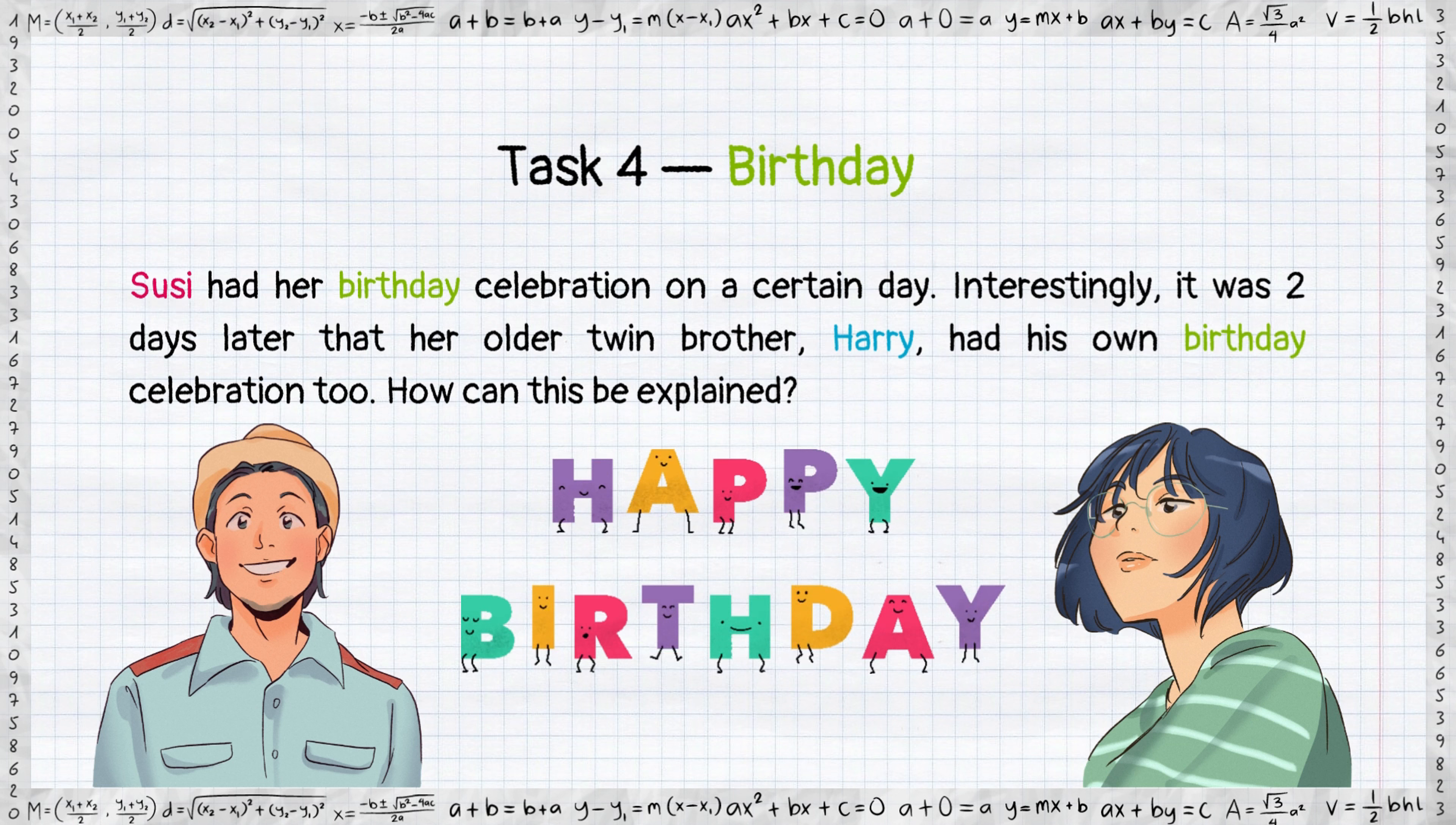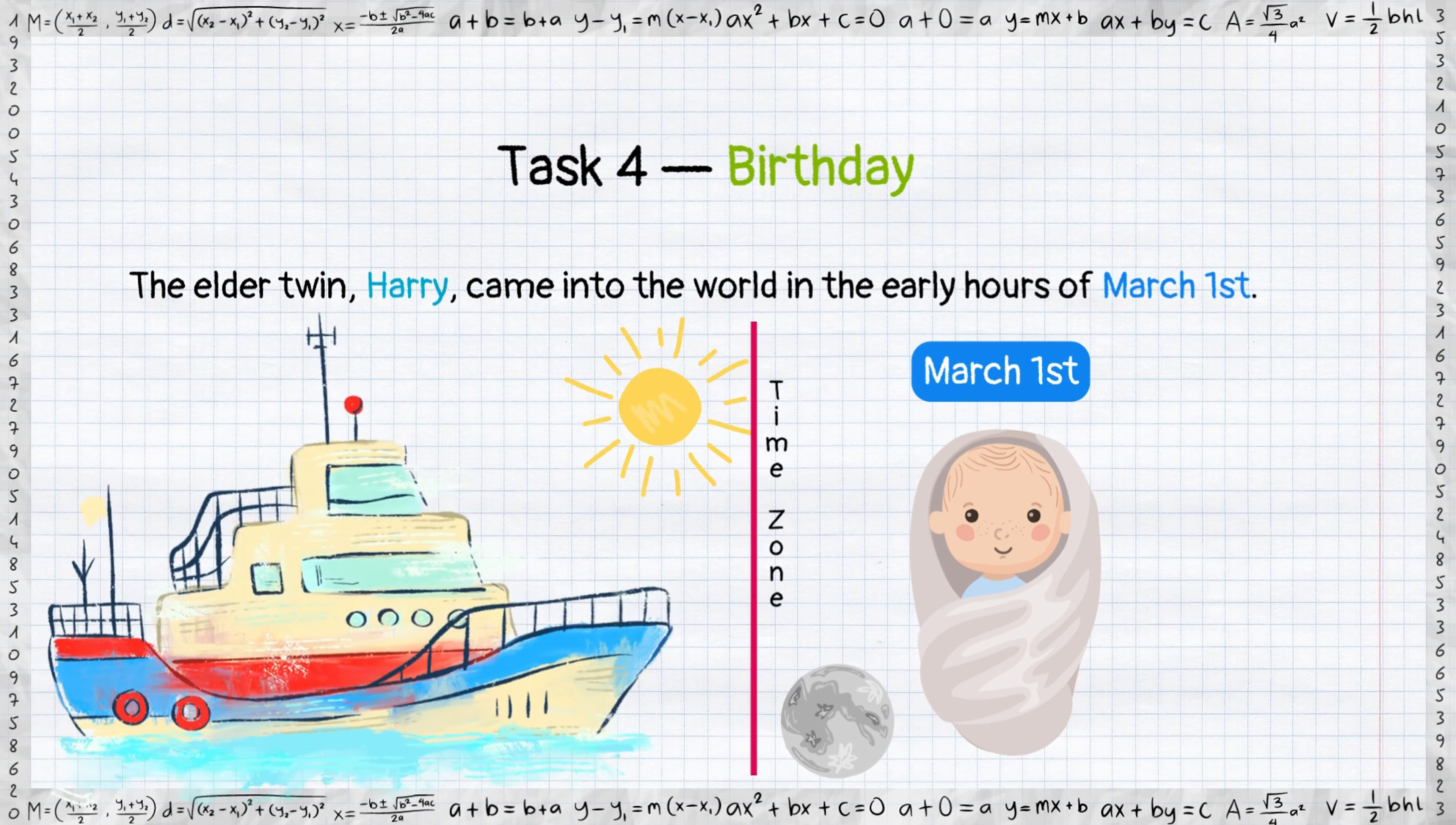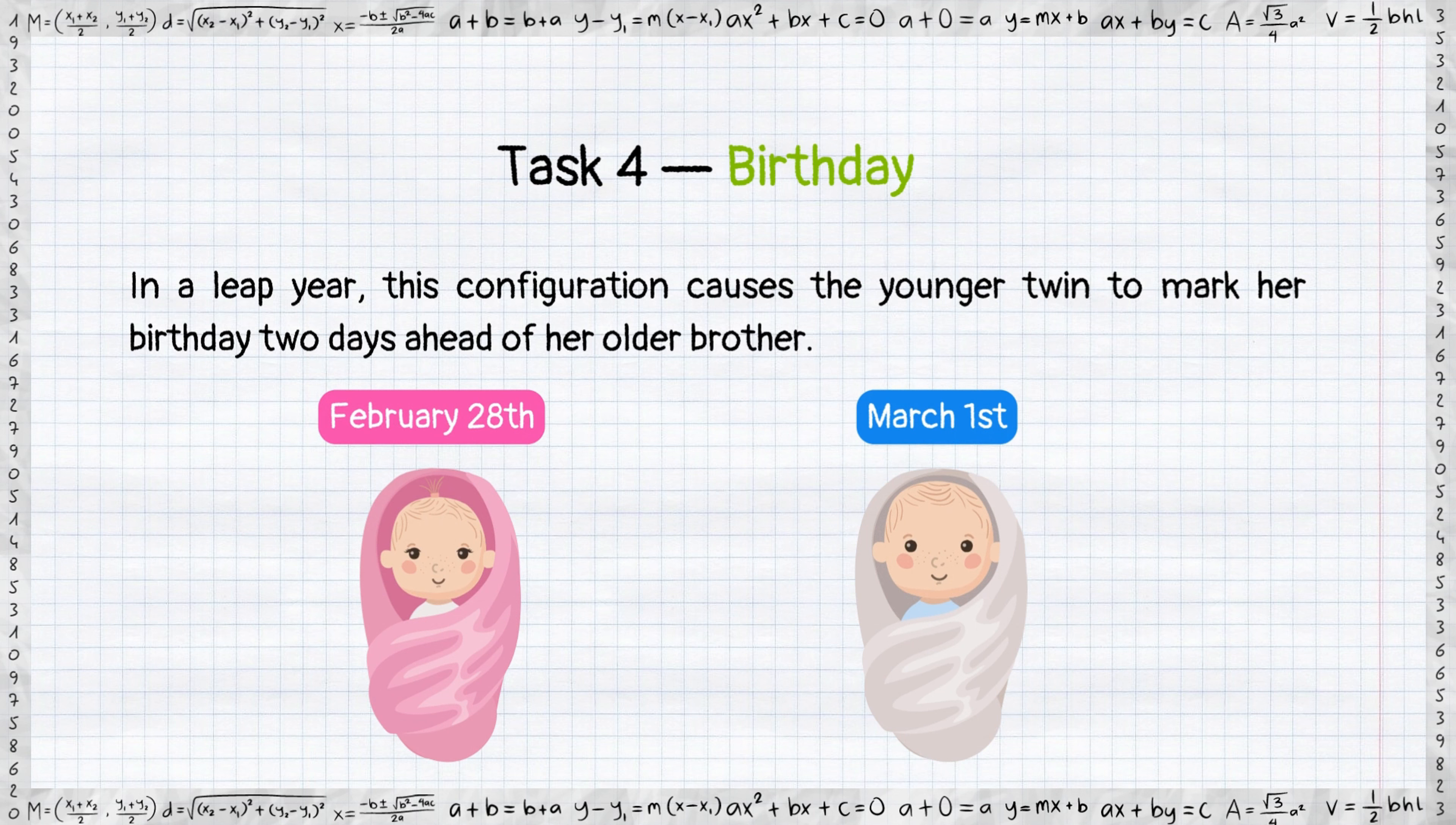I know you are excited. Here is the answer. During the birth of twins, the mother was on a cruise ship. The elder twin Harry came into the world in the early hours of the 1st of March. After that, the cruise ship crossed over the International date line. As a result, Susie the younger twin was born on the 28th of February in a leap year. This configuration causes the young twin to mark her birth two days ahead of her older brother.